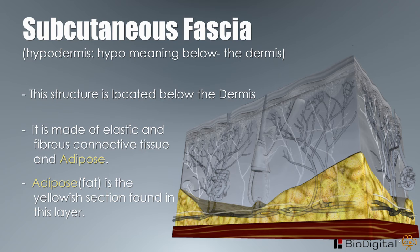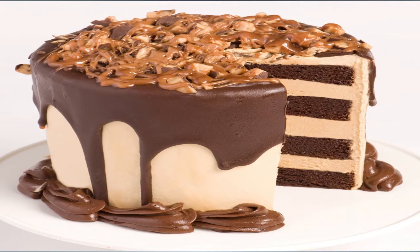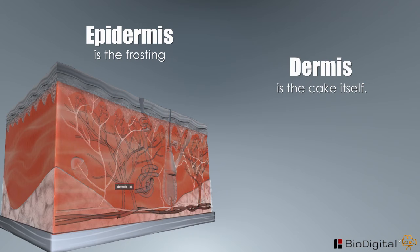We can compare our skin to a piece of cake. The epidermis is the frosting. The dermis is the cake itself. And the subcutaneous, or hypodermis, is the bottom of the cake connecting to the pan.